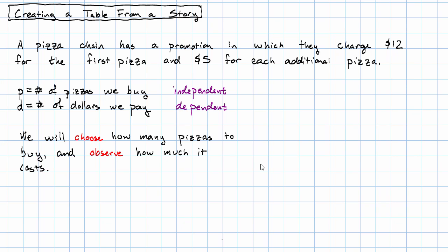This relationship is most easily shown in a table. Why? Well, in the story it tells us that if we buy one pizza, we pay $12. And then it says we pay $5 for each additional pizza.